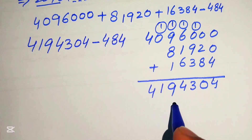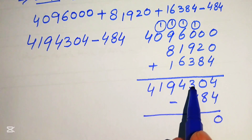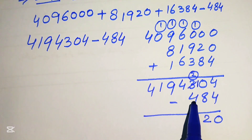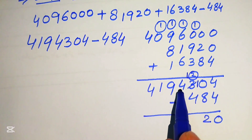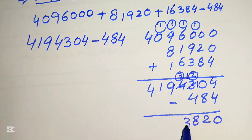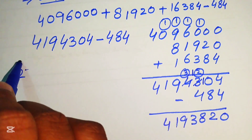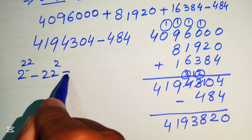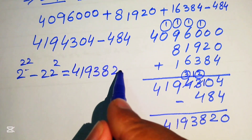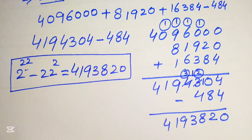Subtracting 484 from 4,194,304: 4 minus 4 is 0; borrow to get 10 minus 8 equals 2; borrow again — 12 minus 4 is 8 — giving us 3, 9, 1, and 4. So the final simplified answer is 2 to the power of 22 minus 22 to the power of 2 equals 4,193,820. Thank you so much for watching this video. Please subscribe to my channel for more exciting videos.